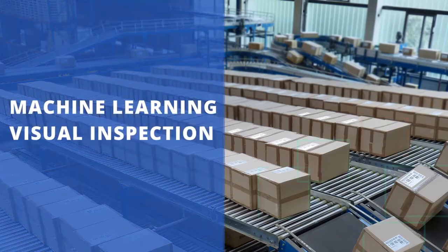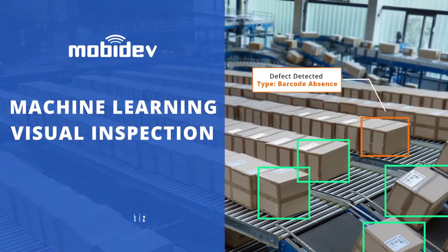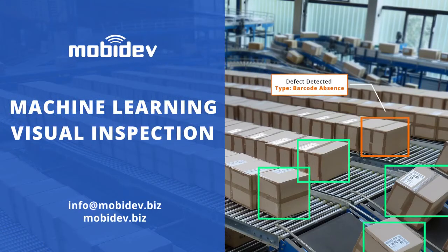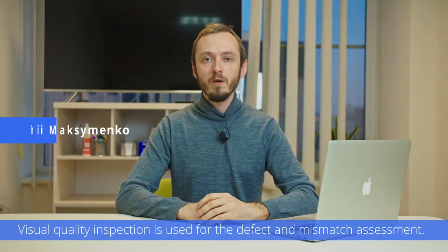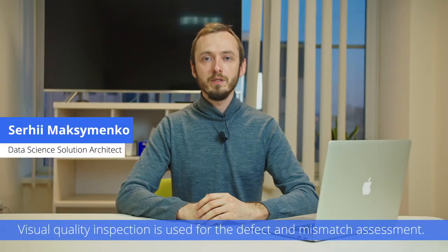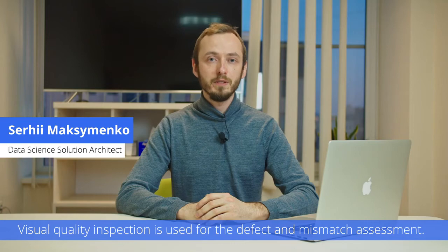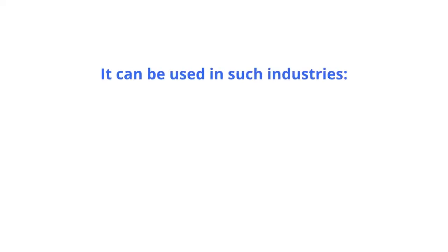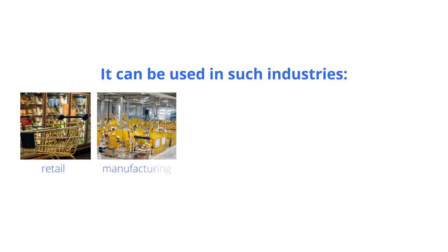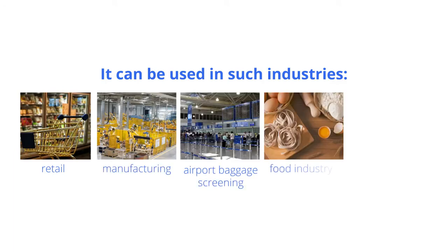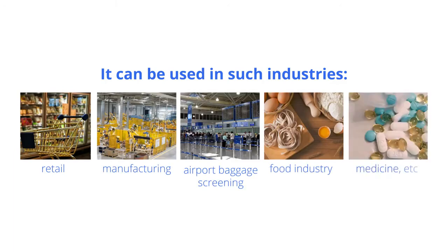This video presents how machine learning based visual quality inspection operates. Visual quality inspection based on machine learning techniques is used for defect and mismatch assessment. It can be used for such industries as retail, manufacturing, airport baggage screening, food industry, medicine, and more.